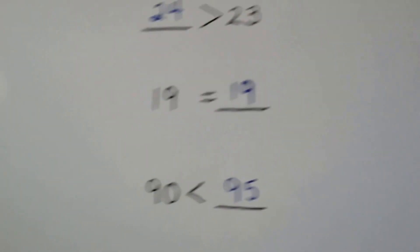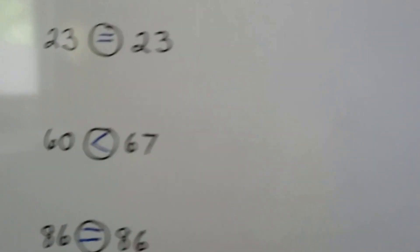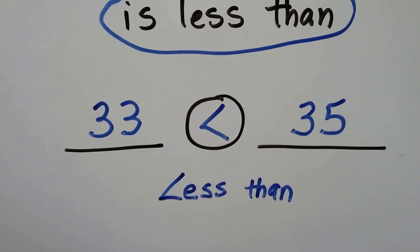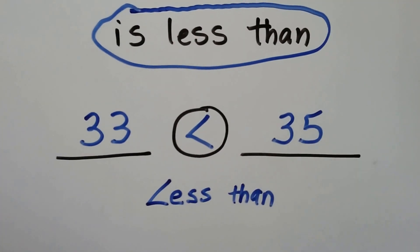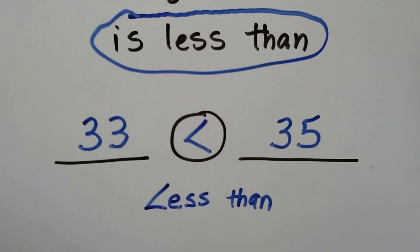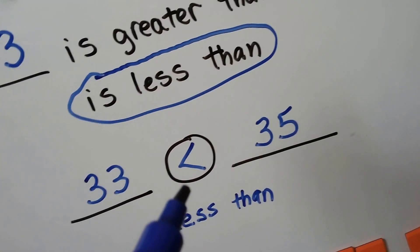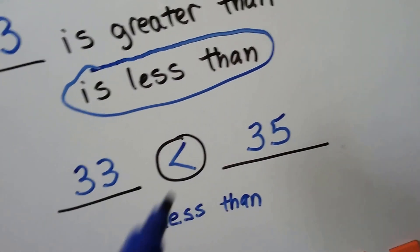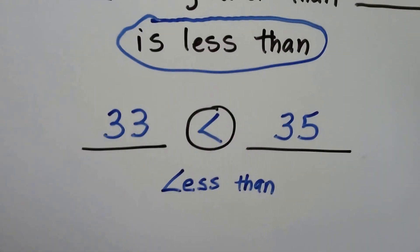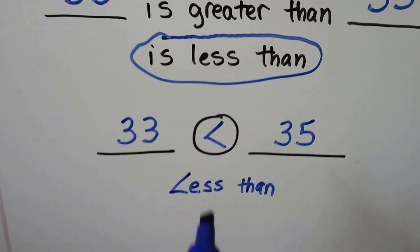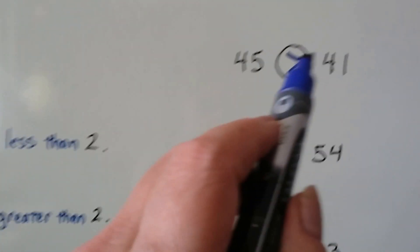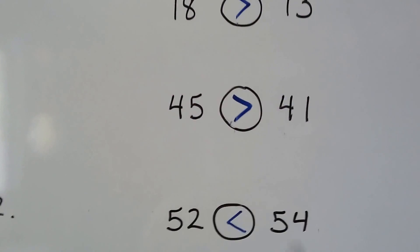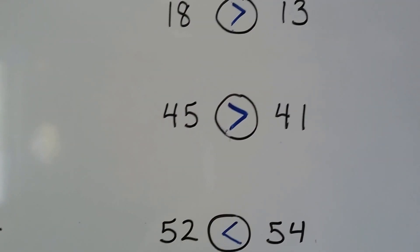So just remember, you can remember which sign is which. This is a less than sign because it almost looks like it's spelling L-E-S-S. We can kind of turn our head sideways and it looks a little bit like an L. So that's less than, and when the big side is facing the left, that's greater than.